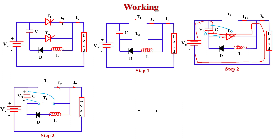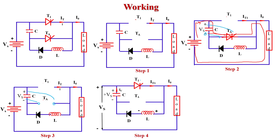After that, we turn on the main thyristor T1. When T1 turns on, it behaves like a short circuit. Current flows in the circuit via two loops. The first loop is from supply voltage Vs, through T1 thyristor, through the load, and back to the supply voltage. The second loop is through the capacitor, T1 thyristor, inductor, diode, and back to the capacitor.